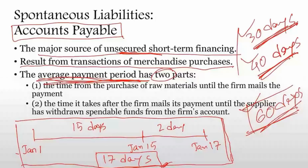In these 17 days we have two types of delay. The first is from the time of purchase to sending the money to the supplier. The second portion is from the day of sending the check to the supplier until the check has been cleared by the supplier. These are the two parts of the average payment period.